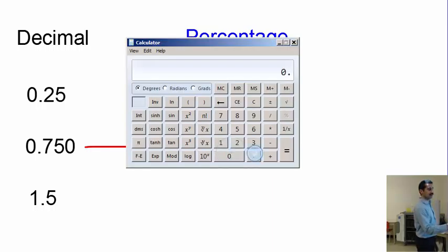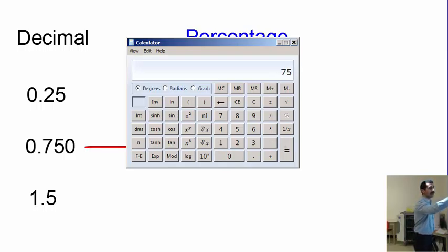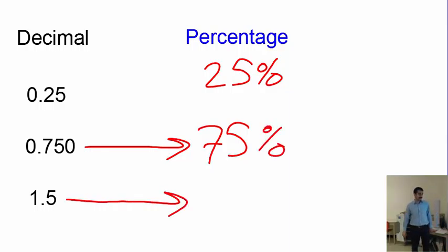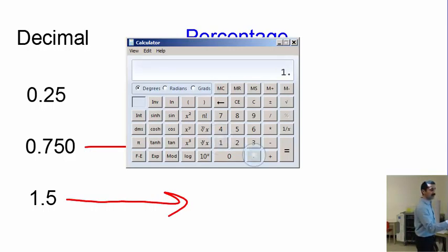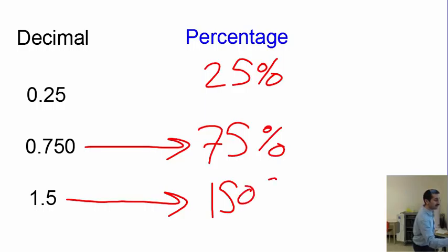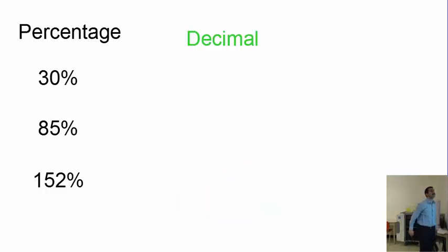Next is 0.750: multiply 0.750 by 100 to get 75, so it's 75%. The next question is 1.5: multiply 1.5 by 100 to get 150, so it's 150%. That's how you make a decimal number into a percentage.